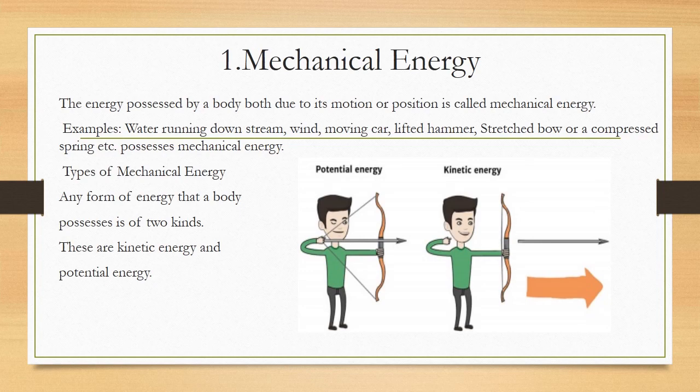Looking at the diagram, a man is stretching a bow. By stretching, a type of energy is being stored in the bow — this is called potential energy. When he releases the arrow, the stored potential energy is converted into kinetic energy. The more potential energy stored, the more kinetic energy will be produced; the less potential energy stored, the less kinetic energy will be produced.